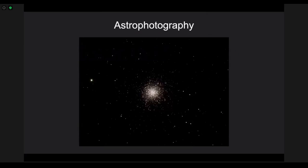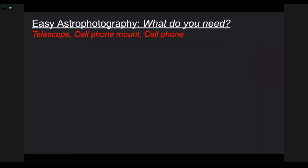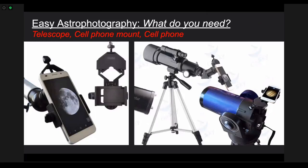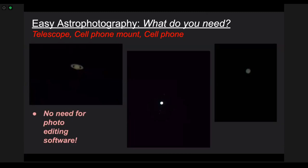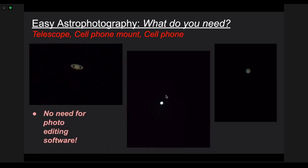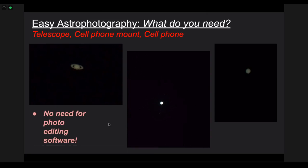Now for astrophotography — taking pictures of astronomical objects through the telescope. One of the easiest ways to do this is with your phone and a cell phone mount. This is the cell phone mount we got for the planetarium. Whatever telescope you have, you attach it to the eyepiece and mount your phone on it, then you just take pictures on your phone like you normally would, seeing whatever the telescope is pointed at. Jessica took these pictures with that setup — we have Saturn here, Jupiter, some of Jupiter's moons, and a closer shot of Jupiter showing the stripes.